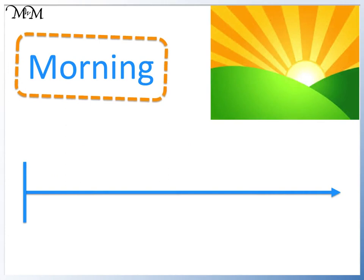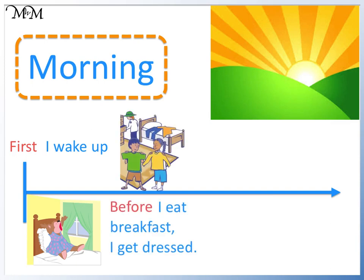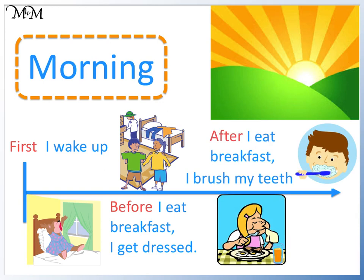Here is the order of the morning activities. First, I wake up — this means that I wake up before I do anything else. Before I eat breakfast, I get dressed. After I eat breakfast, I brush my teeth. Before breakfast means that we get dressed and then have breakfast. After breakfast means that we have breakfast and then brush our teeth.